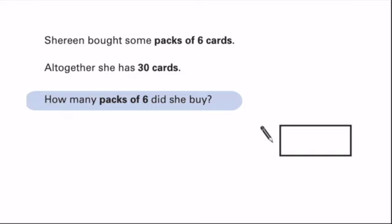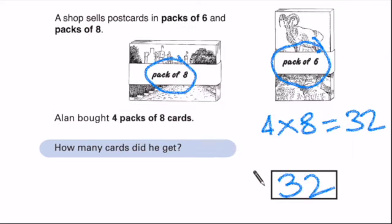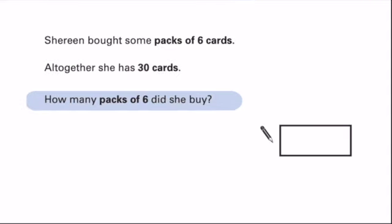Shireen bought some packs of 6 cards. Altogether, she has 30. Let's just go back. So Shireen, let's change colour. Shireen bought these ones, a pack of 6. And she got 30 cards. So how many packs did she buy? Press pause while you work that out.